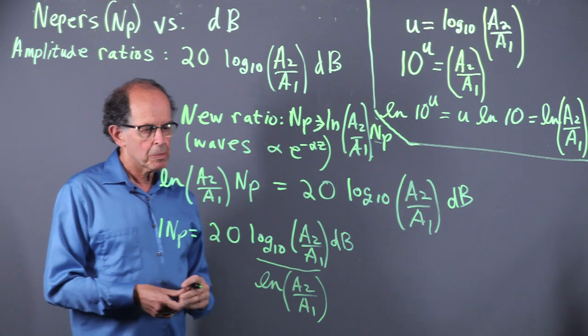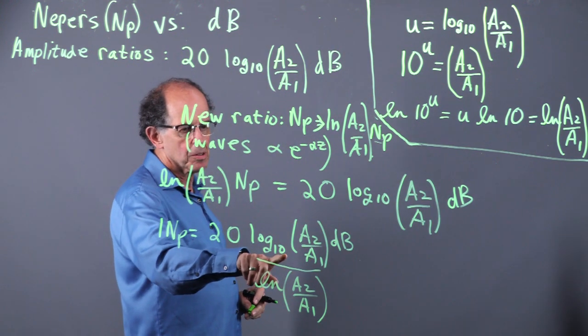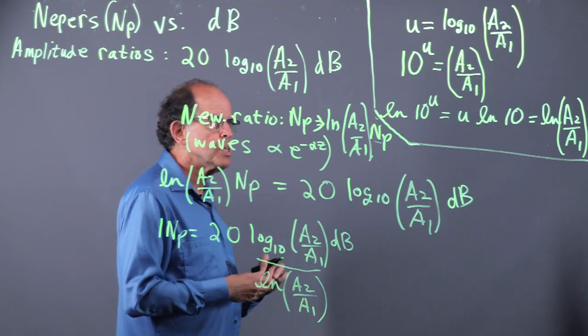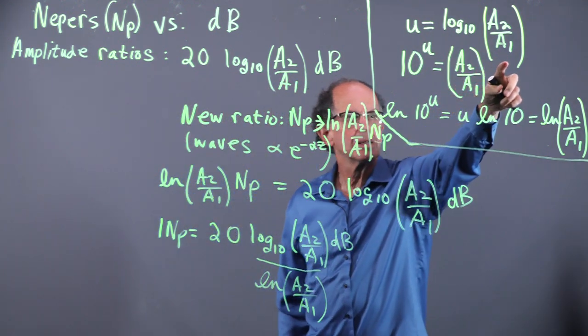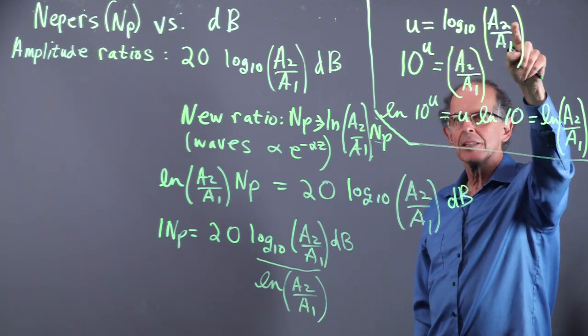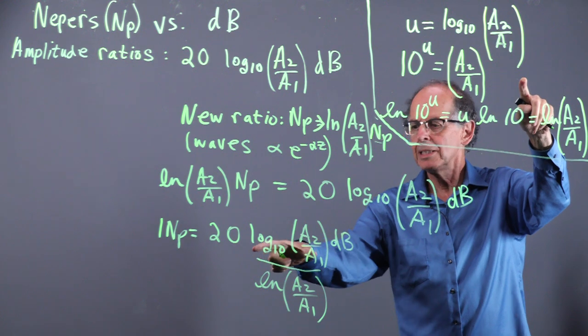So what we have to do is express log to the base 10 of the ratio in terms of log to the base E, and that's done up here in the corner. So we'll let U equal log 10 A2 over A1. That's this quantity here.